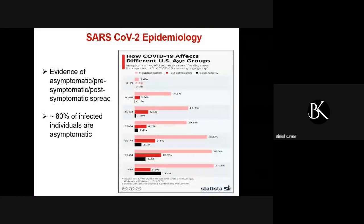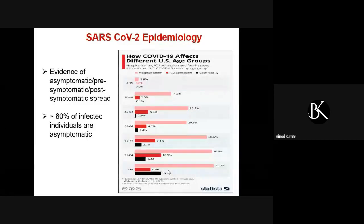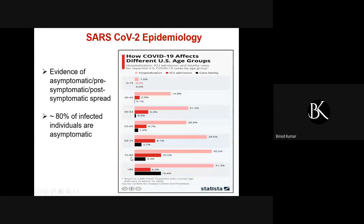Looking at the age-wise correlation between hospitalization, ICU admission, and case fatality: the maximum is seen in the 85+ age category, followed by 75 to 84 and 65 to 74. The younger generation is comparatively safer than older individuals, again because of the immune response.